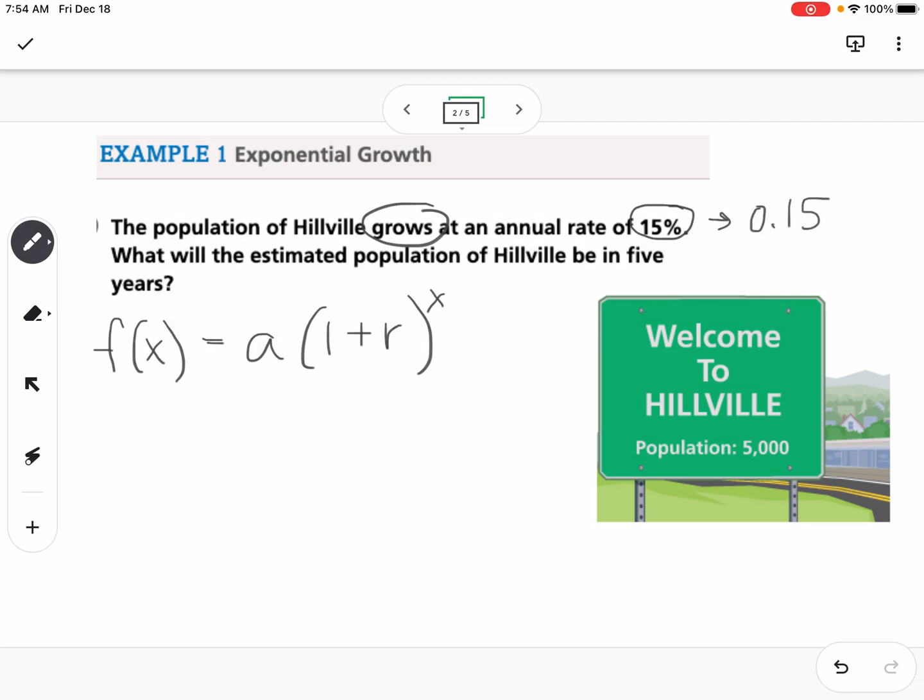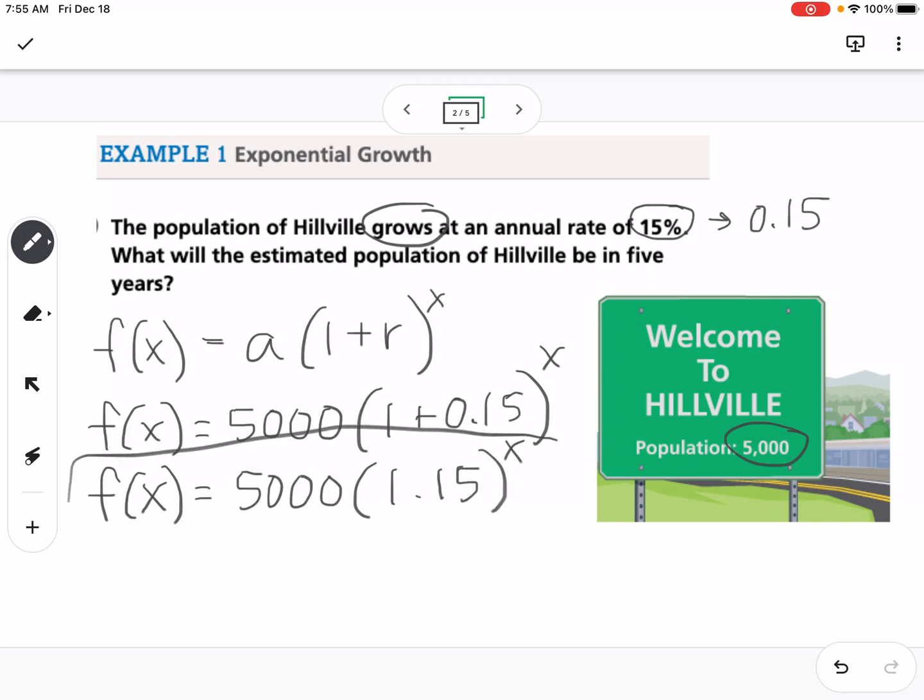So now we're going to fill in. Our a value is always our starting value, which on the sign here shows us 5,000. So 5,000 times (1 + 0.15)^x. Now we can simplify that. We could say 5,000 times 1.15^x. So there's our equation.